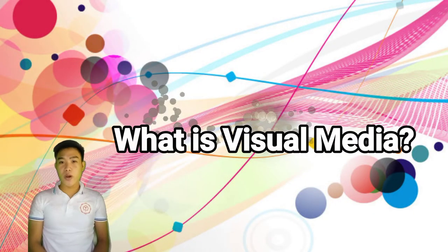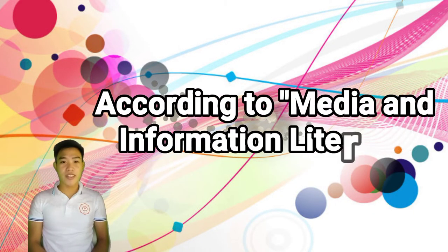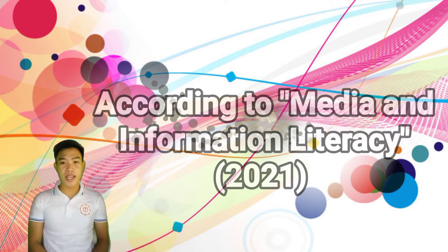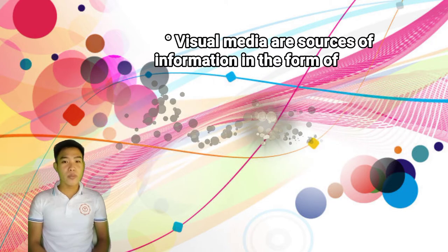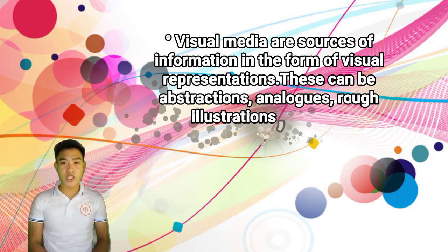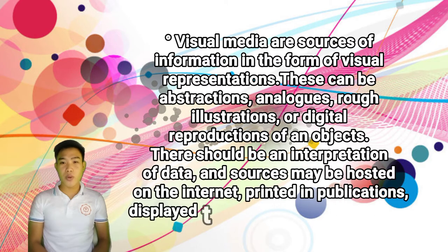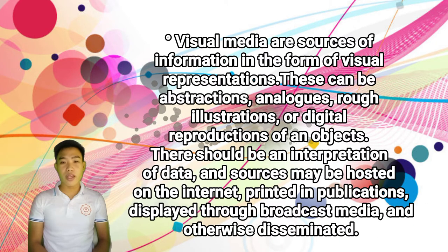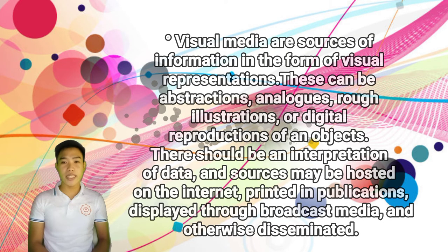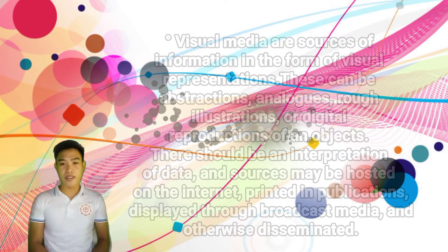What is visual media? According to Media and Information Literacy of 2021, visual media are sources of information in the form of visual representations. This can be instructions, analogs, rough illustrations, or digital reproductions of an object. There should be an interpretation of the data, and sources may be hosted on the internet, printed in publications,